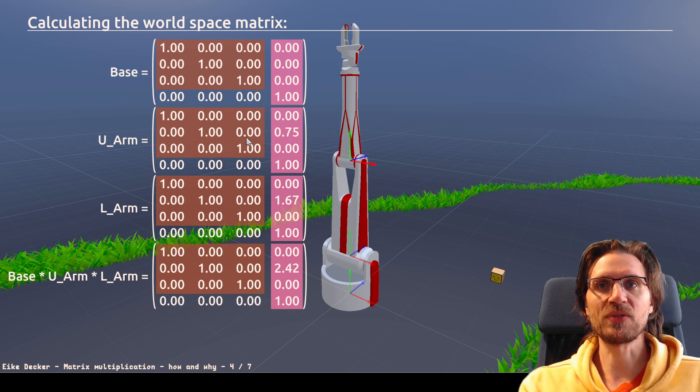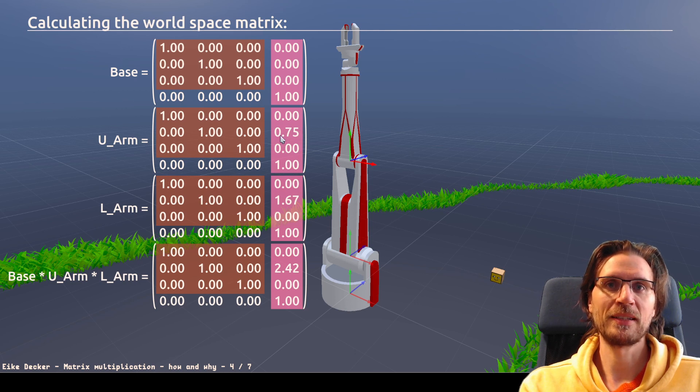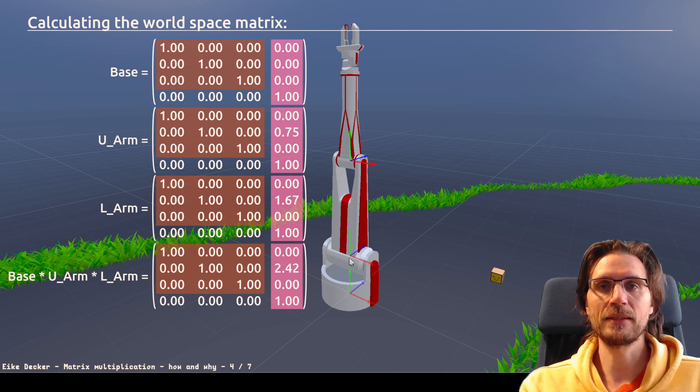The upper arm looks very similar. There's currently no rotation in place. But it has a translation, 0.75 units upwards. So, the distance from here to here is 0.75 units. The lower arm matrix is similar, but it says it's 1.67 units from here to here. And when we combine them all together, base times upper arm times lower arm, we get this matrix here.